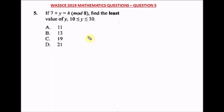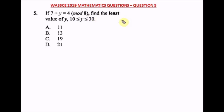Question five of the WAEC 2019 mathematics past question. It says: if 7 + y ≡ 4 (mod 8), find the least value of y, where y is greater than or equal to 10 and less than or equal to 30. Remember modular arithmetic — there is always one question on this in WAEC. If you don't know it, revise it. I haven't covered it on the channel yet, but I will soon.